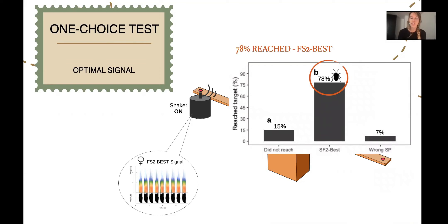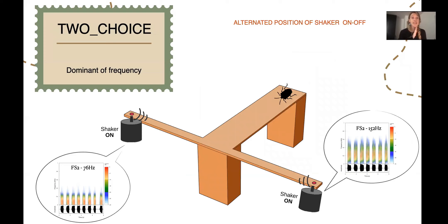In fact, we found that 78% of individuals reached the shaker emitting FS2 best. Several behavioral studies have demonstrated the ability of insects to localize exact sources of vibration for either prey location or mate location. The precedent studies that I have mentioned with BMSB demonstrated that the species can also localize the source of an attractive signal. But in addition, in the present study, we demonstrated that males can distinguish between two sources that are transmitting signals with different spectral parameters.